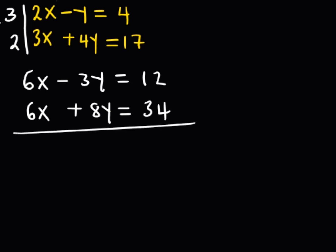Now to eliminate x, we are going to subtract. 6x minus 6x, we get 0. So, minus 3y minus 8y, we get negative 11y. And everything is equal to 12 minus 34,